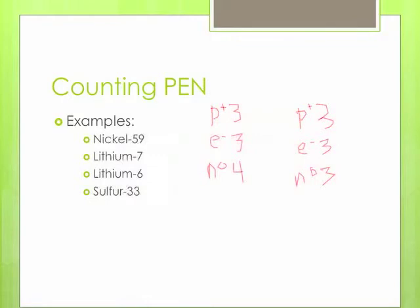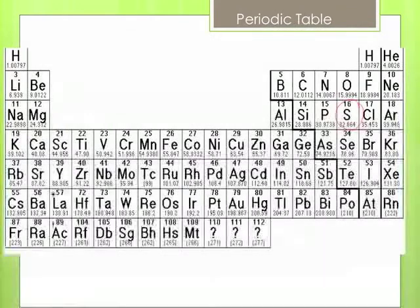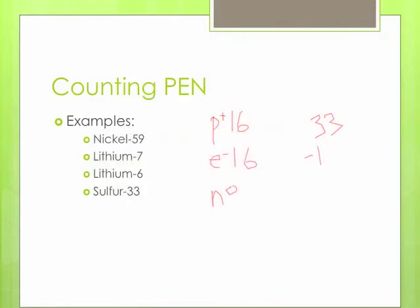Let's do one more example with sulfur-33. Finding sulfur on the periodic table, we can see the atomic number is 16. So we have 16 protons and 16 electrons. For neutrons, we do 33 minus 16 to get 17 neutrons.